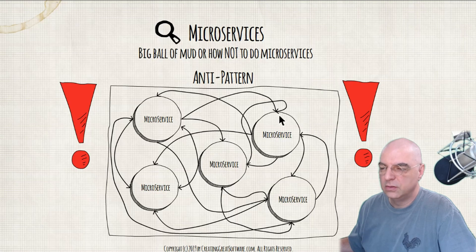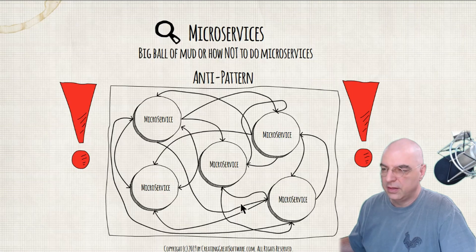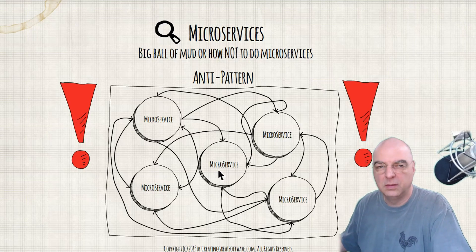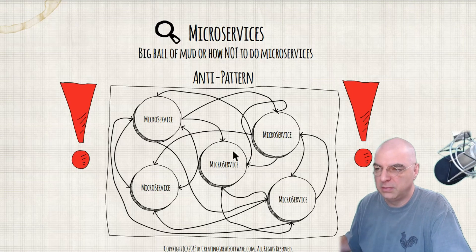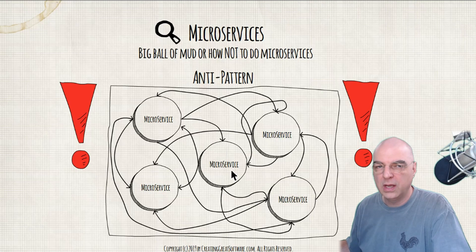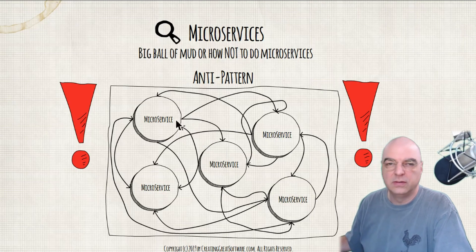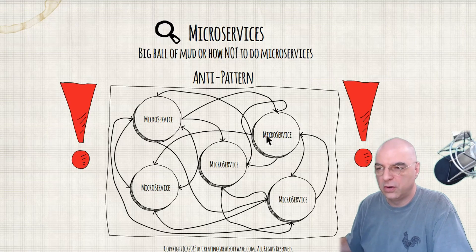Because when you look at this big ball of mud, this big mess, other microservices are calling your microservice. So you will most likely break contracts on the APIs that you created, and create dependencies that make it very difficult to replace anything. So there are so many headaches. You don't want to go into that — avoid this at all costs.